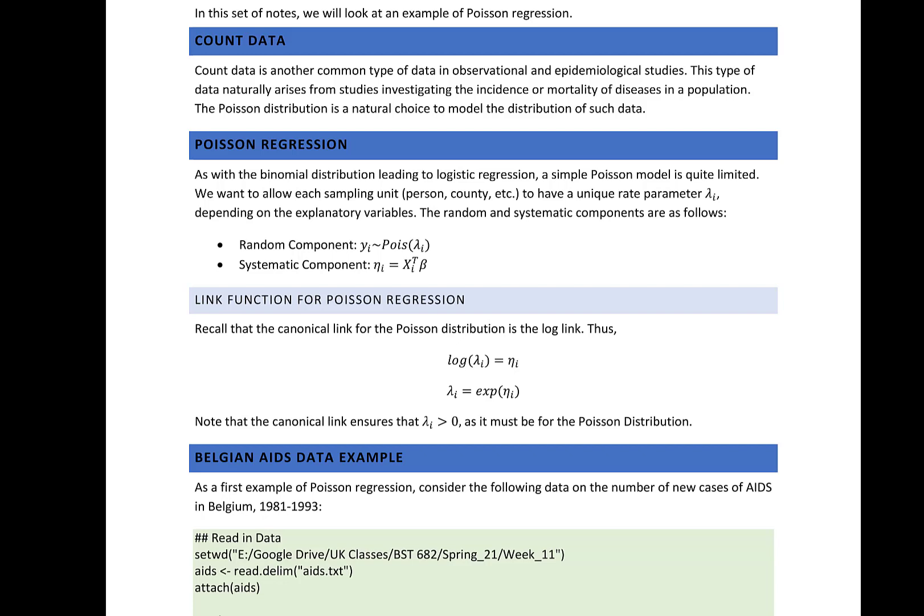In this video we're going to look at Poisson regression. Previously we primarily focused on logistic regression where we have a binary outcome. In this set of notes we're going to look at when our outcome is count data. Count data is often common in observational as well as epi studies, and it naturally arises from studies investigating the incidence of mortality or disease in a population. Anytime your outcome is counts, that's when Poisson regression may be appropriate.